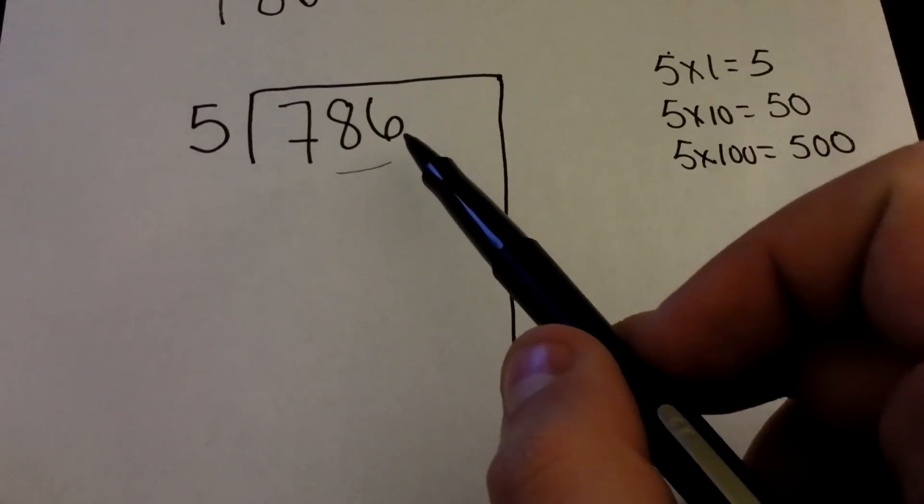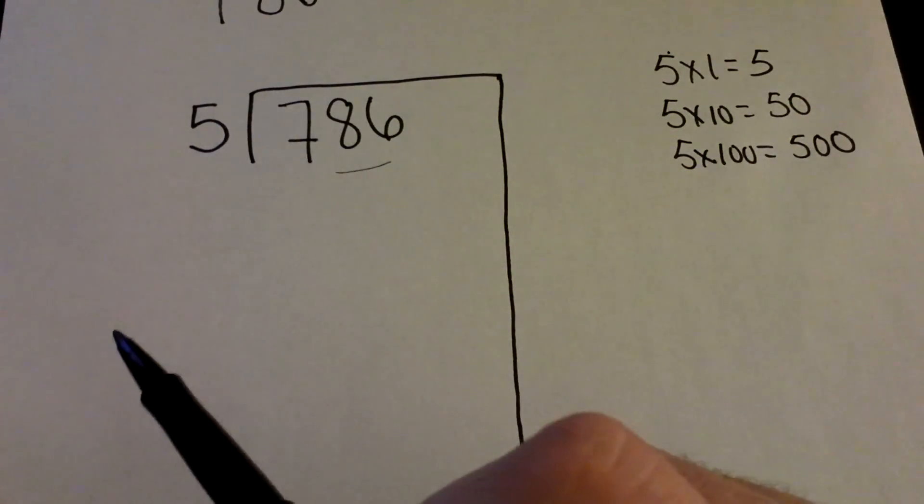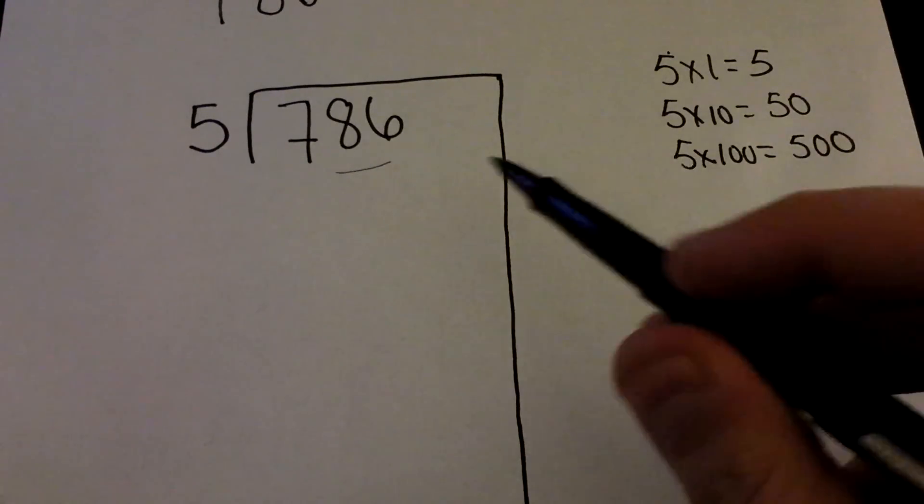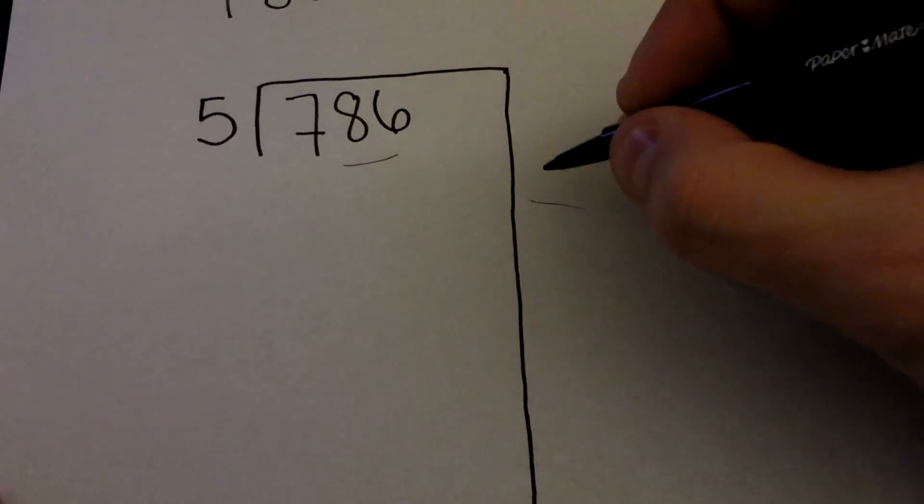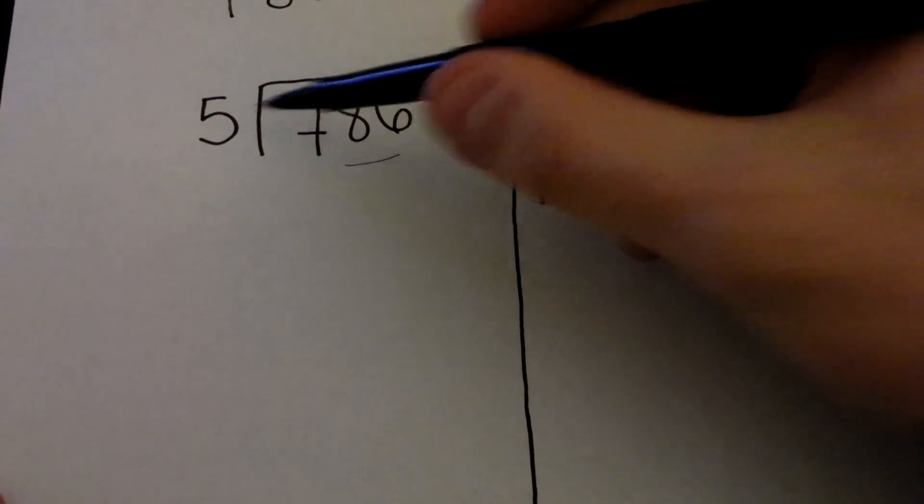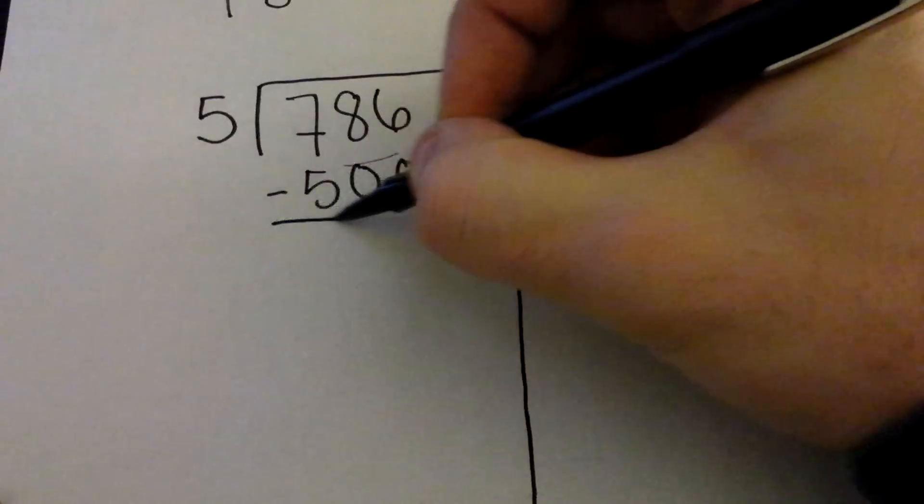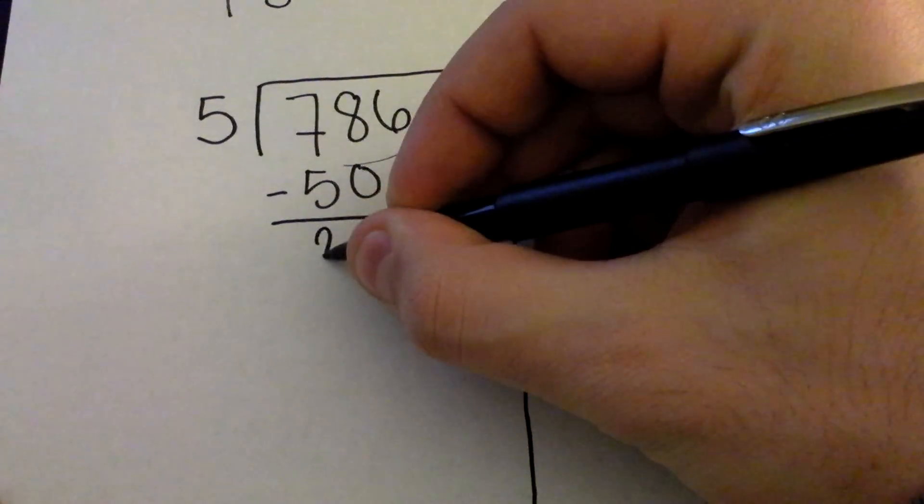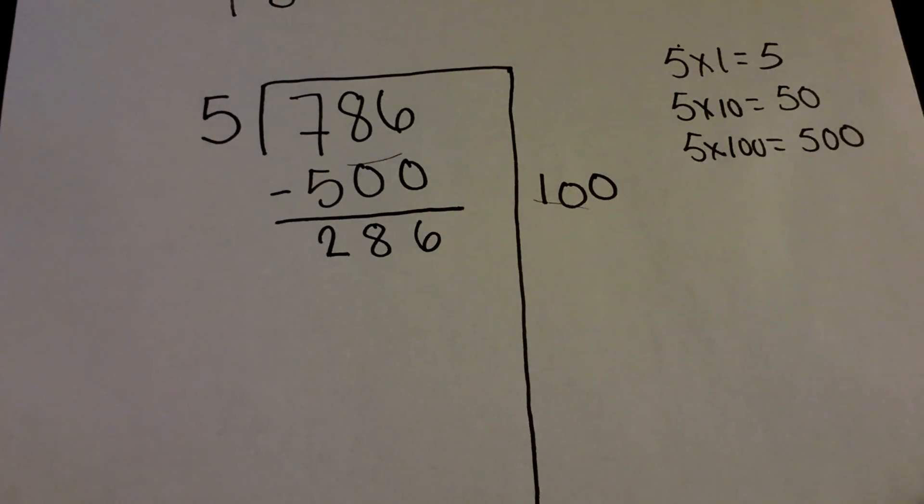Looking at our number of 786 that we want to get into here, we know that we want to find out how many times 5 goes into 786. Using our multiplication skills, we know that 5 goes into 786 at least 100 times. So there's our first step. Let's take out 100 groups of 5. 100 groups of 5, or 100 times 5, would equal 500. When we do our subtraction here, we find that we still need to separate 286 into groups of 5.